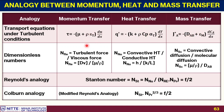The important dimensionless numbers used to define these transport processes are: the Reynolds number for momentum transfer, which is turbulent force divided by viscous force; the Nusselt number for heat transfer, which is convective heat transfer to conductive heat transfer; and the Sherwood number for mass transfer, which is convective diffusion to molecular diffusion. The commonality is that the numerator represents convective transfer and the denominator represents molecular transfer.